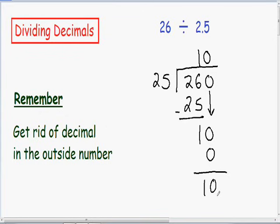So notice how we still have a remainder of 10 in this problem. And since we still have a remainder that's not 0, we need to keep on going. So what I'm going to do is add a trailing 0. 260 is exactly the same as 260.0. So now we can continue with this problem. We need to bring our 0 down.